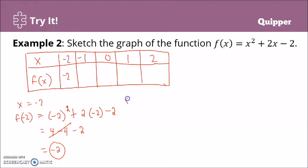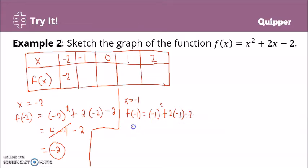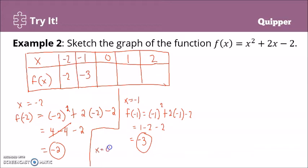When x equals negative 1, f(-1) = negative 1 squared plus 2 times negative 1 minus 2. Negative 1 squared is positive 1. 2 times negative 1 is negative 2. So 1 minus 2 is negative 1, and negative 1 minus 2 is negative 3. Next, when x equals 0, f(0) = 0 squared plus 2 times 0 minus 2. This is 0 and this is also 0, so that is negative 2.